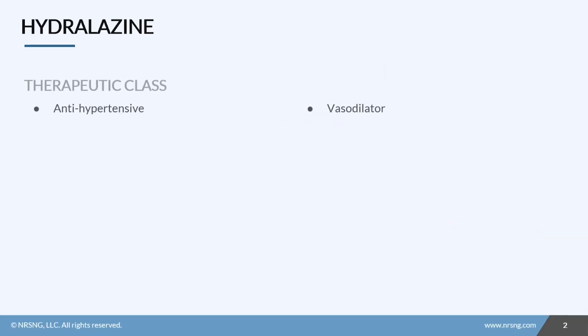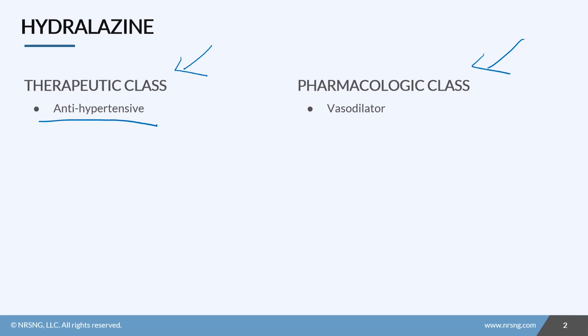Remember, when we talk about the therapeutic class, we're talking about how the drug works in the body, while the pharmacologic class is the chemical effect of the drug. So hydralazine is an antihypertensive, while its pharmacologic class is a vasodilator.